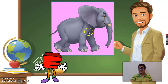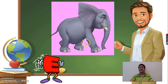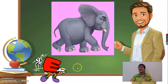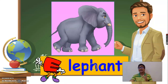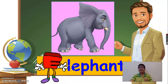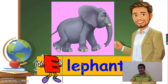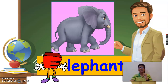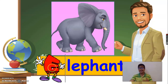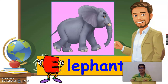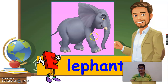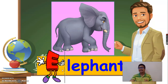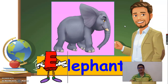Can you tell me what is it? It's an elephant. Elephant begins with the letter E. Again, letter E. Very good. What is it? It's an elephant. Very good.